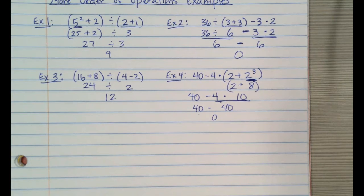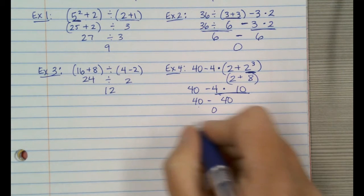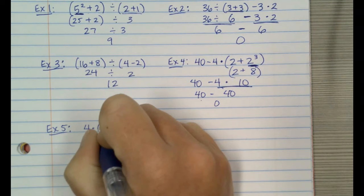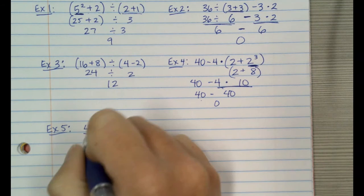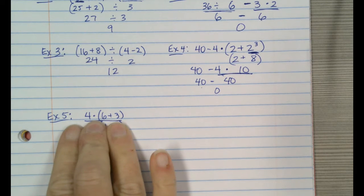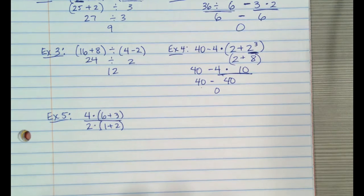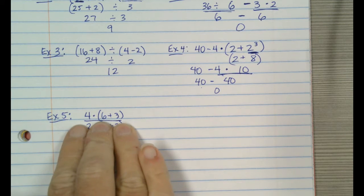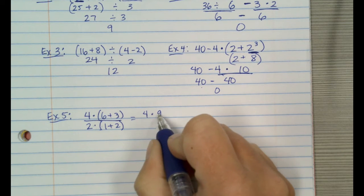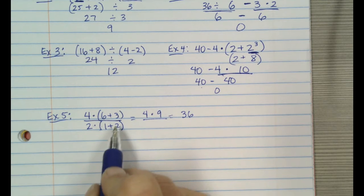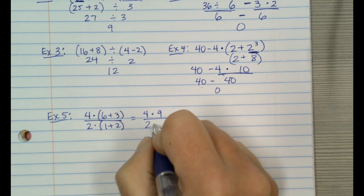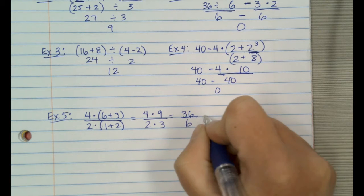Now I want to look at some that have a numerator and a denominator — this is where it gets a little tricky. The first one is 4 × (6 + 3) over 2 × (1 + 2). The way I think you should do these is look at the numerator as its own problem, then come back and look at the denominator. For the numerator, parentheses first: 6 plus 3 is 9, then 4 times 9 is 36. For the denominator: 1 plus 2 is 3, then 2 times 3 is 6. 36 divided by 6 is 6.